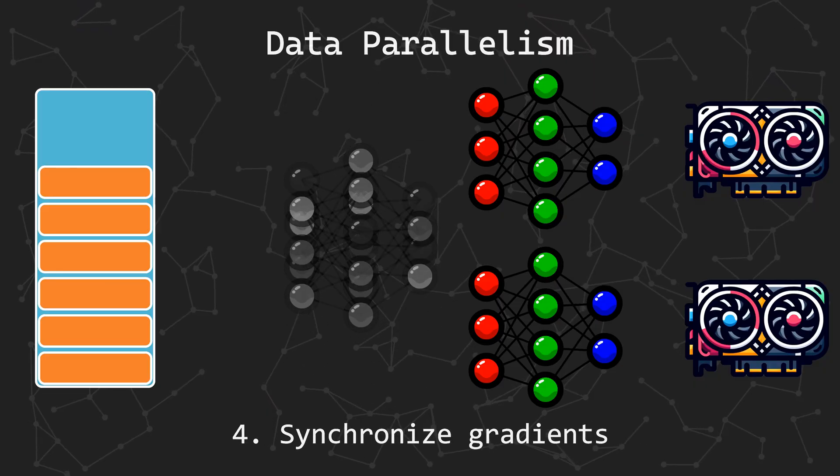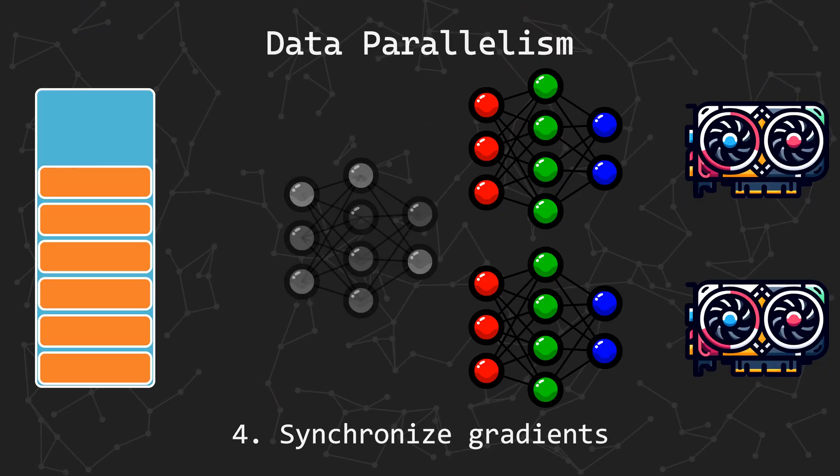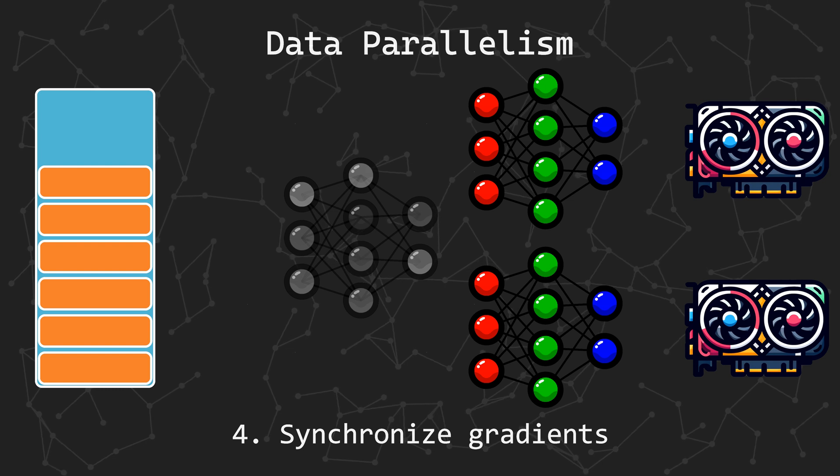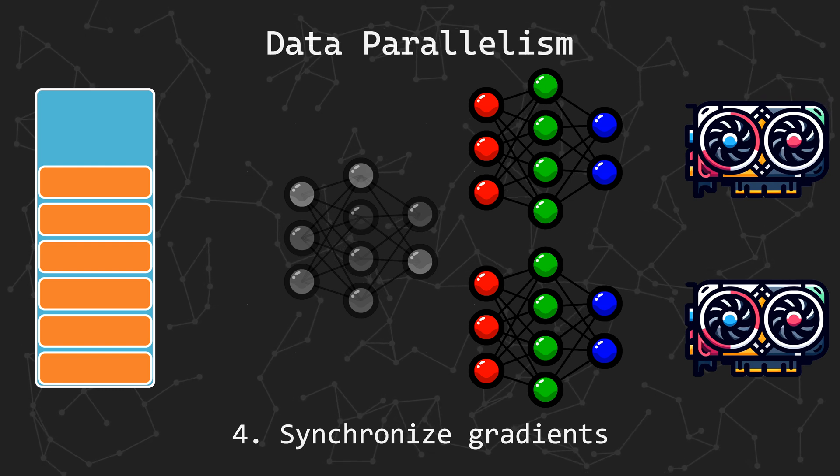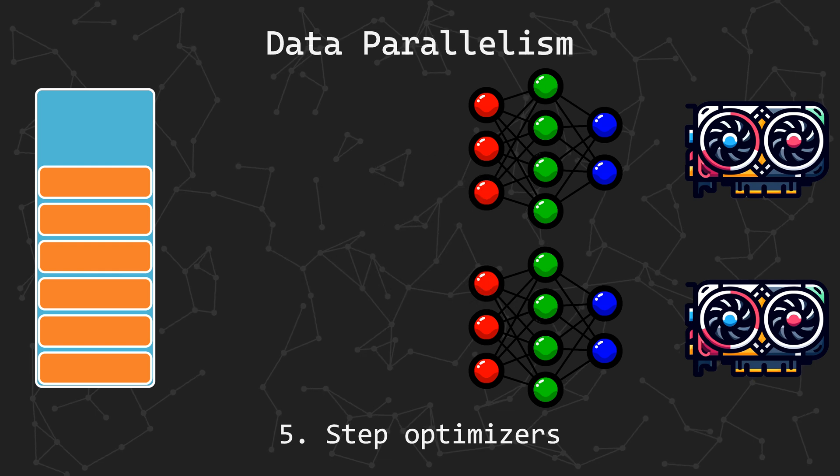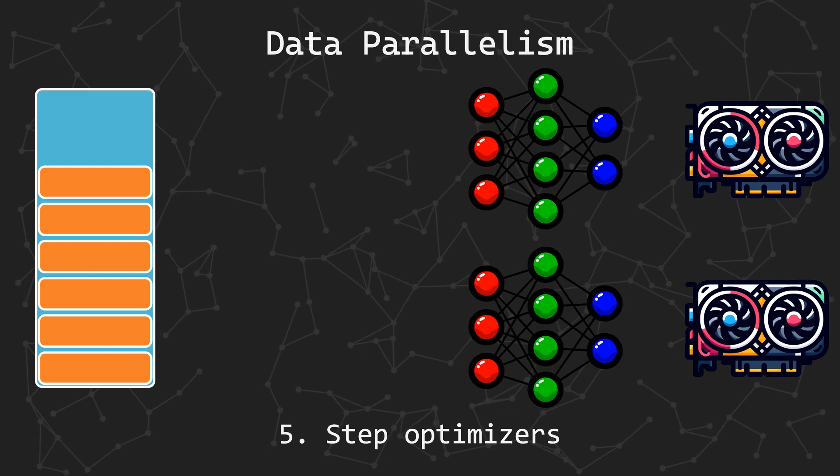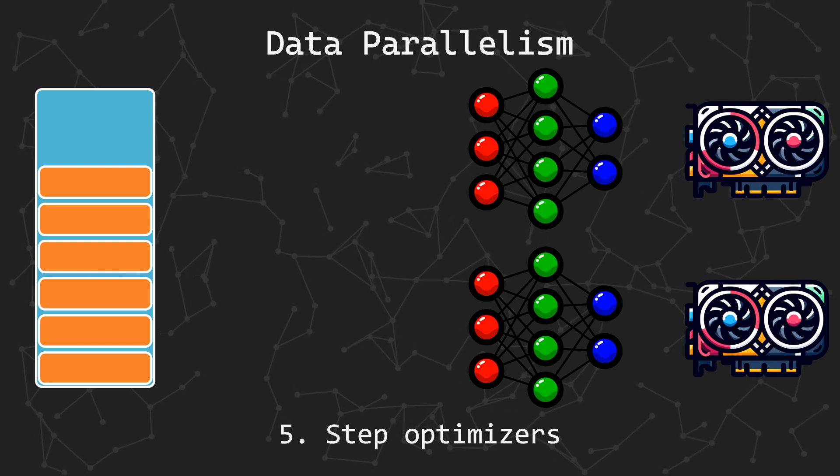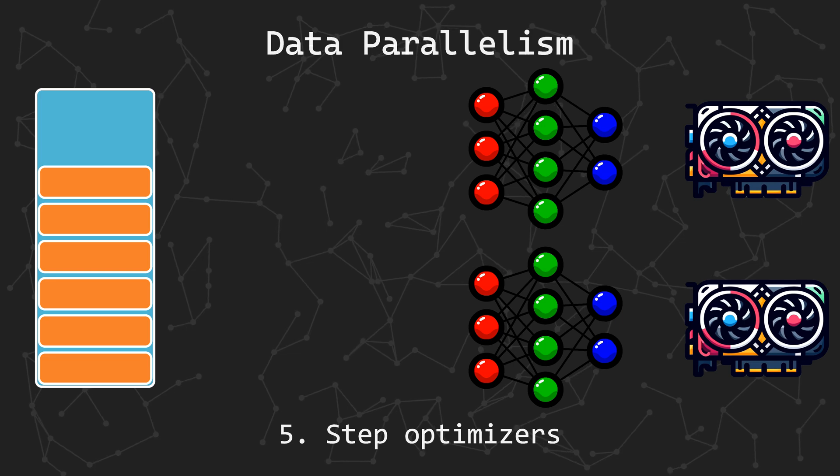Let's take separate batches from the dataset and give one to each GPU. Each GPU then performs an independent forward pass, loss calculation, and backward pass. But before stepping with our optimizer, we need a synchronization step. Without it, each GPU would train independently, negating the benefits of having multiple GPUs in the first place.